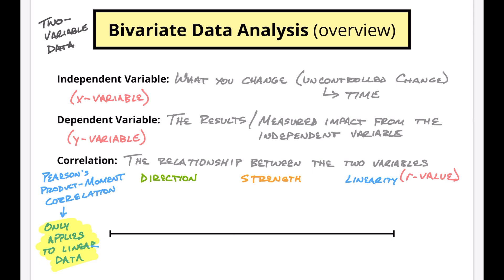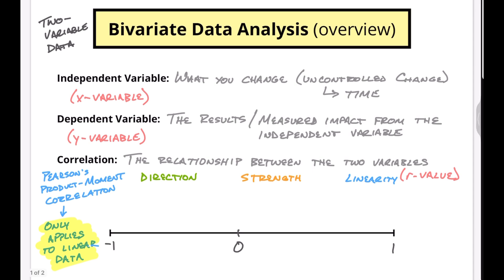The values for Pearson's product moment correlation fall between negative one and one, with zero in the middle. On the right side, positive one is considered perfect positive. Over at negative one, that is perfect negative. That means all the data values are lined up exactly on a line — every single point is on the line. If we have a correlation value of zero, we say there is no correlation.